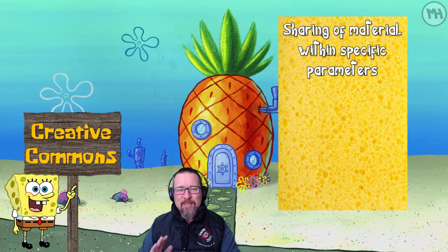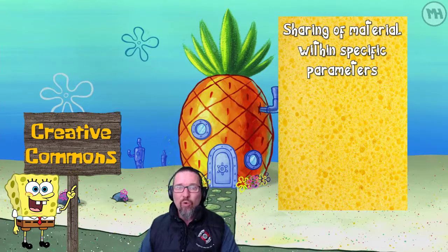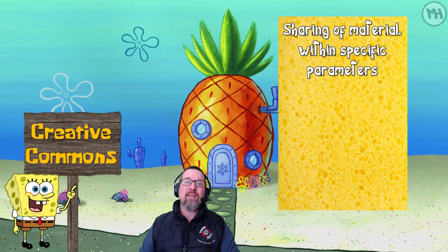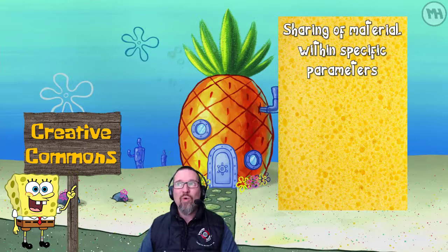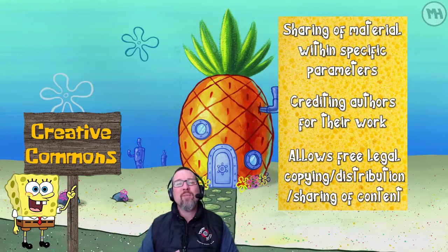So what is Creative Commons? It's being able to share material with specific parameters. You can say: 'everybody can use it for free, no strings attached,' or 'everybody can use it for free but must credit me,' or 'everyone can use some of it for free, but if you want to make money from it, you need my permission first.' It's about crediting authors and making sure their name is visible with the work being shared.